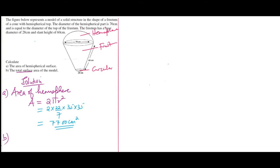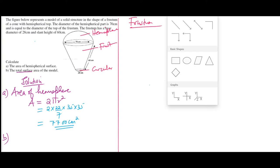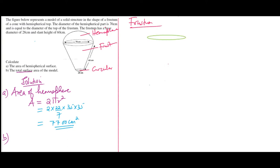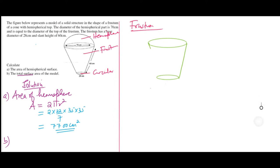Let's proceed and calculate the area of the frustum. We need to do some sketching. Let's sketch the frustum — it has a top diameter of 70 cm and a bottom diameter of 28 cm.